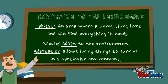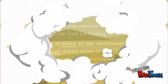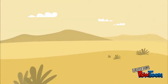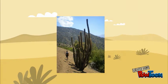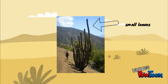And now I'm telling you a couple of examples. Imagine you are in a desert. What plants are you going to see? Cactuses. Cactuses adapted to their environment by having small leaves to reduce water loss and also deep roots to absorb more water.